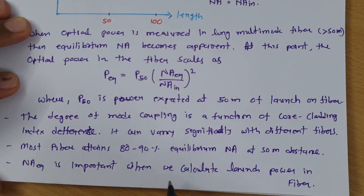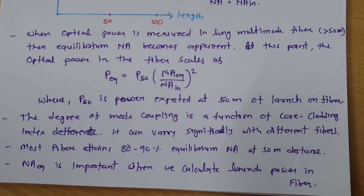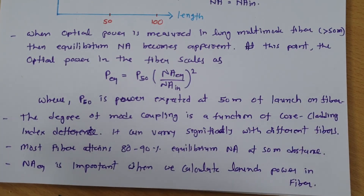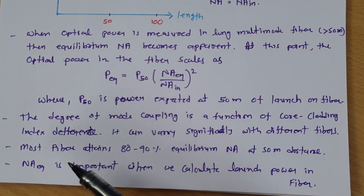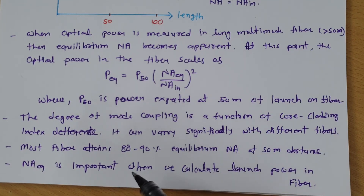Numerical aperture equilibrium is important when we calculate launch power in fiber. I have also calculated launch power in step-index fiber using LED and launch power in graded-index fiber using LED, where numerical aperture is a very important parameter. This launch power has significance for shorter distance communication due to excess loss from scattering, and that is what is explained by equilibrium numerical aperture in this session.